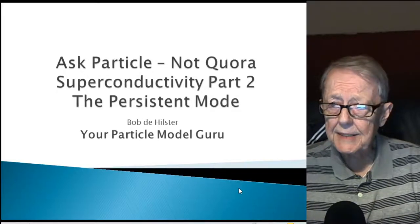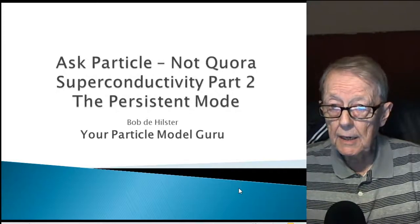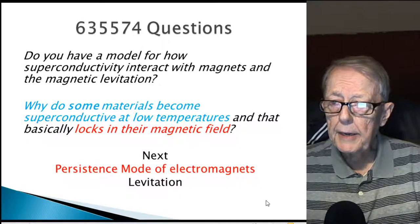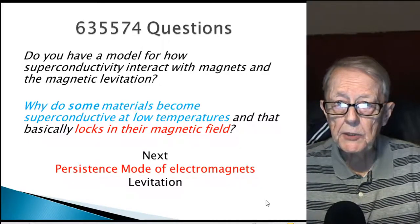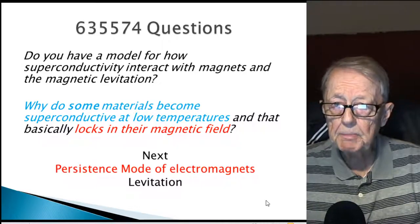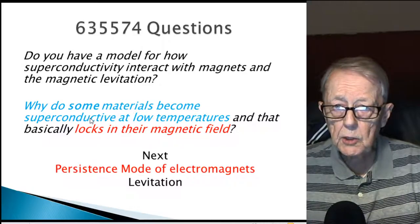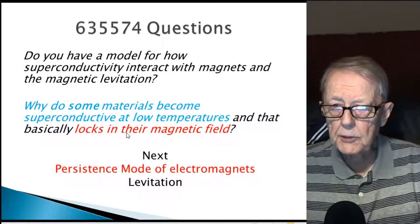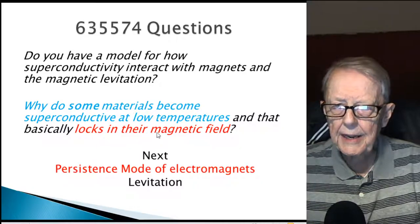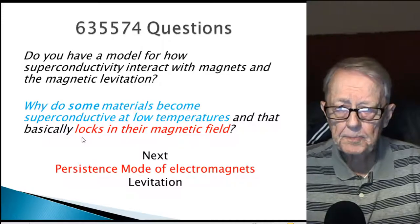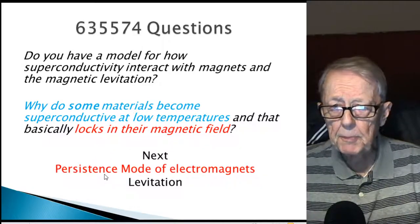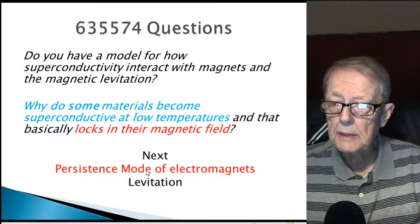Today's video is the second video on superconductivity — Part 2: The Persistent Mode. A viewer, number 635574, asked me a couple of questions. My first video talked about what superconducting materials are at low temperatures, and today I'm going to answer his question about locking in their magnetic field. I didn't quite get the reference to locking — maybe it referred to magnetic levitation — but what I found was something about the persistent mode of electromagnets, which I find quite interesting.